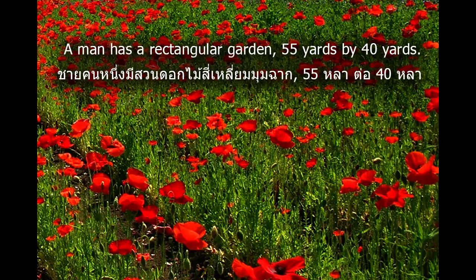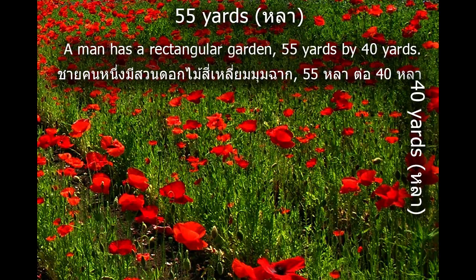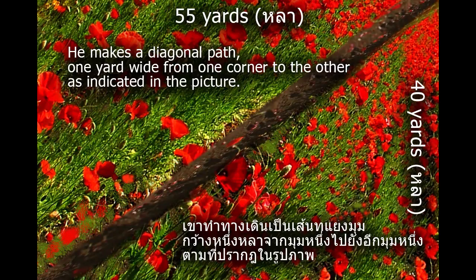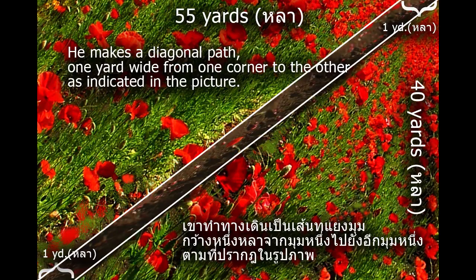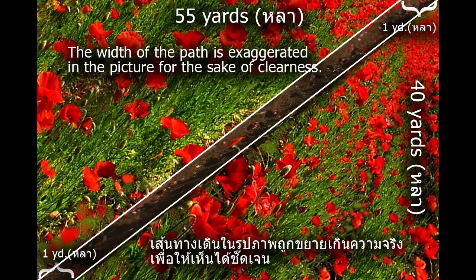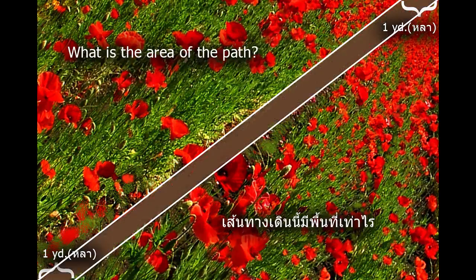A man has a rectangular garden 55 yards by 40 yards. He makes a diagonal path one yard wide from one corner to the other, as indicated in the picture. The width of the path is exaggerated in the picture for the sake of clearness. What is the area of the path?